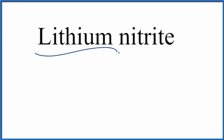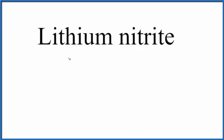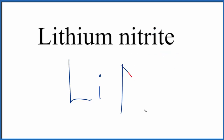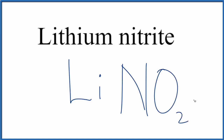To write the formula for lithium nitrite, the first thing we need to do is write the element symbol for lithium — that's just Li. For nitrite, you won't find this on the periodic table. It ends in -ITE, which means it's a polyatomic ion. So you either memorize that the nitrite ion is NO₂ with an ionic charge of 1 minus, or if you're allowed, you look it up on a table of polyatomic ions.